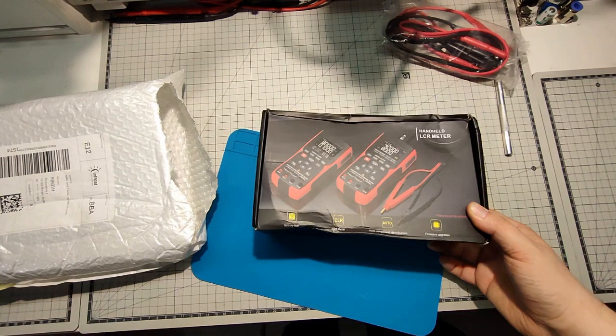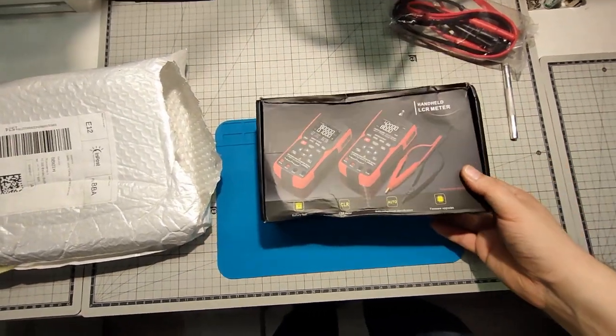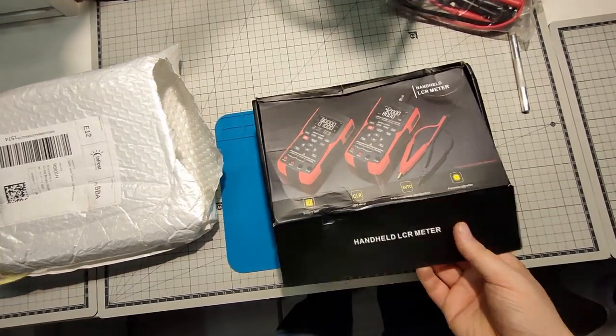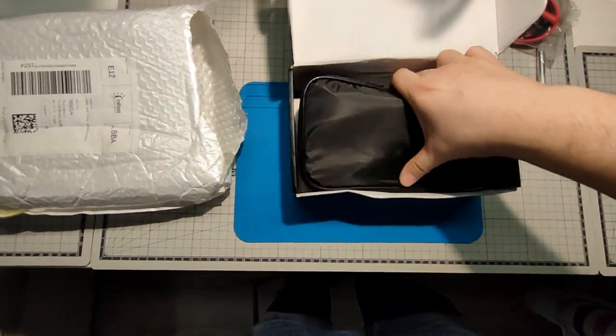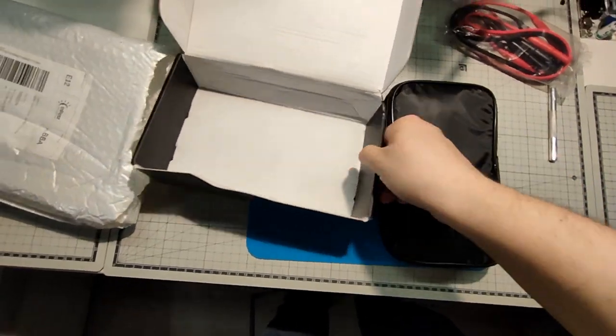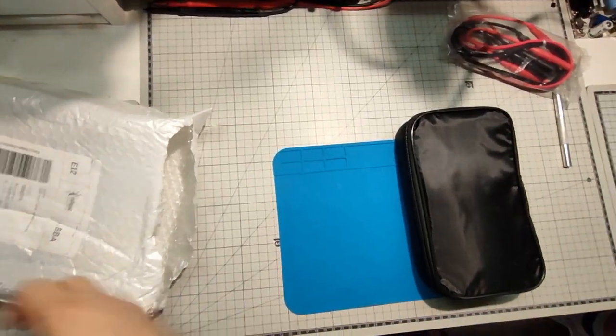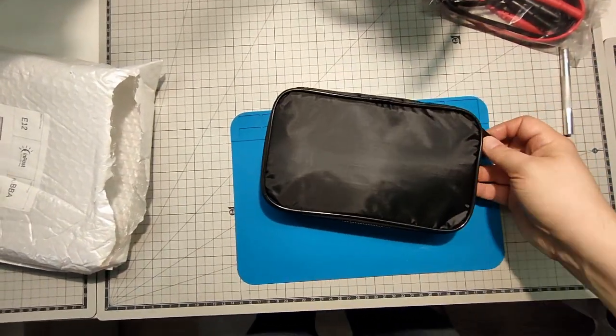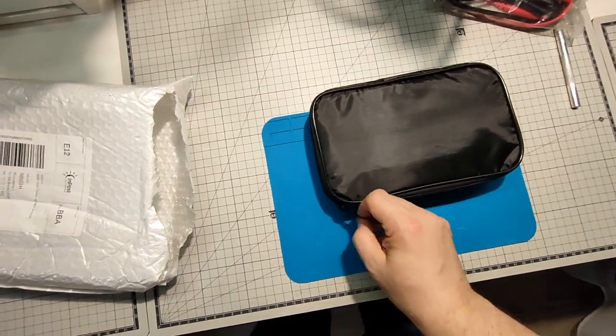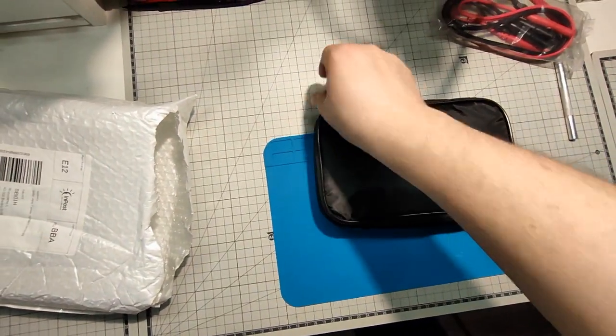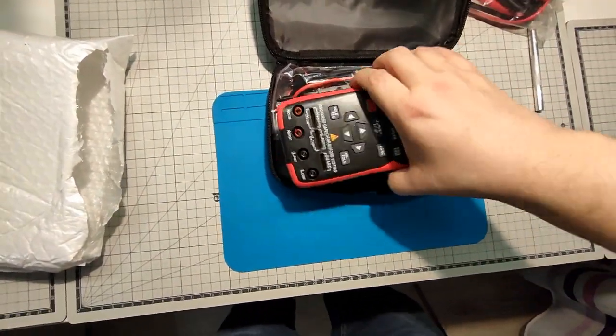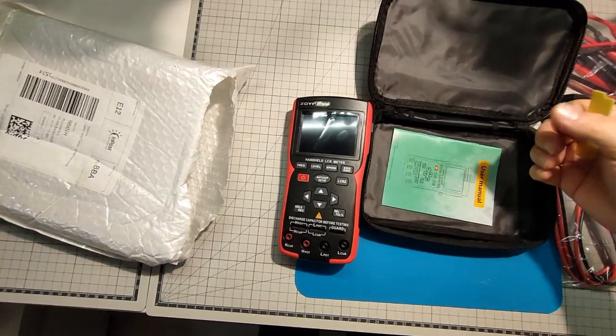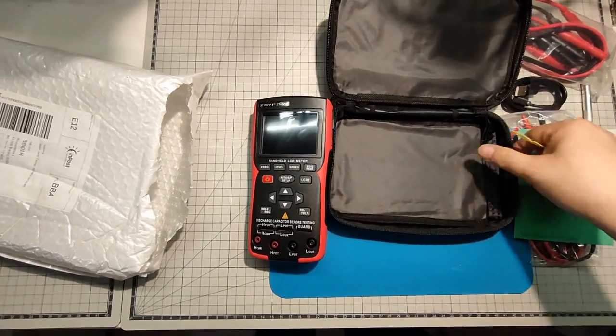This is DQ01 so it's the basic model without battery internal resistance metering. It's in the pouch like other ZOE meters and scope meters. I think it's almost the same or even the same external shell. It looks exactly like their scope meters.